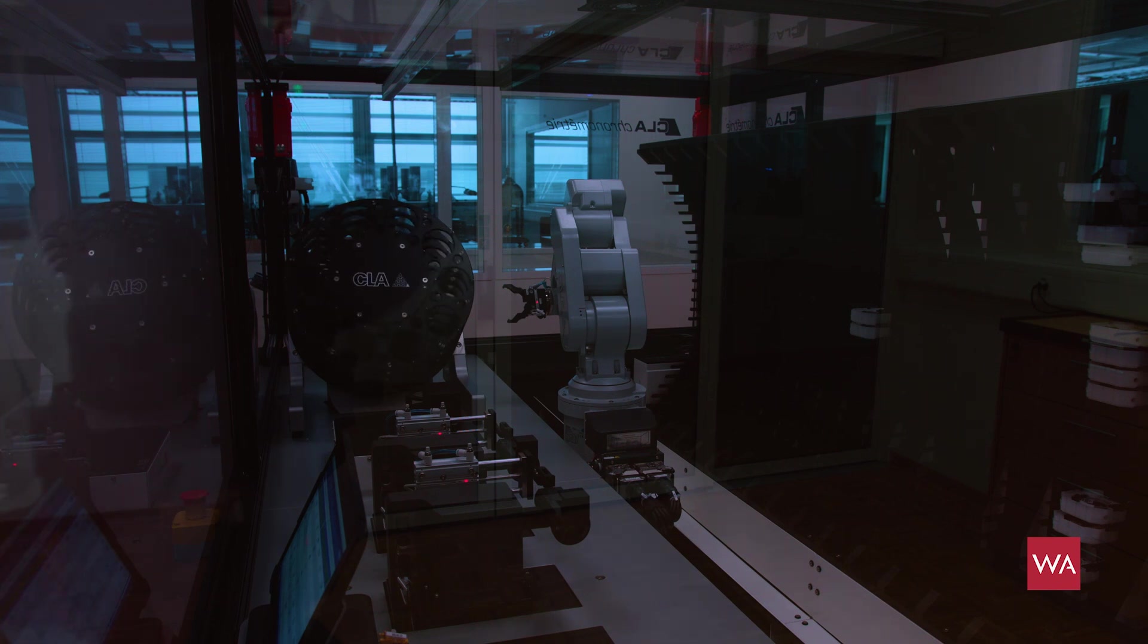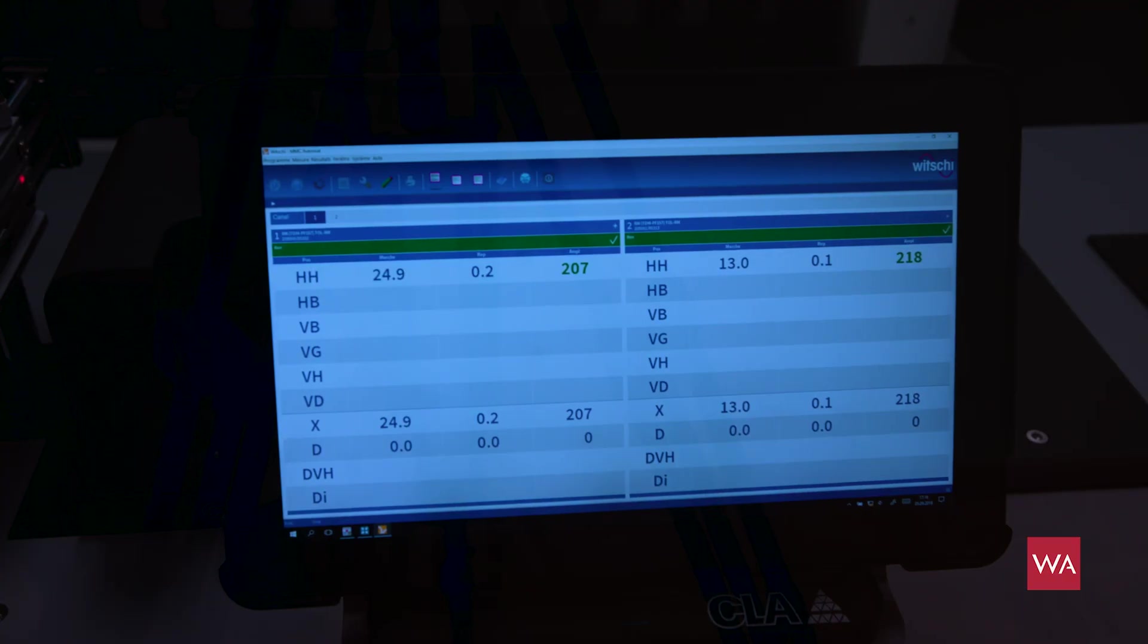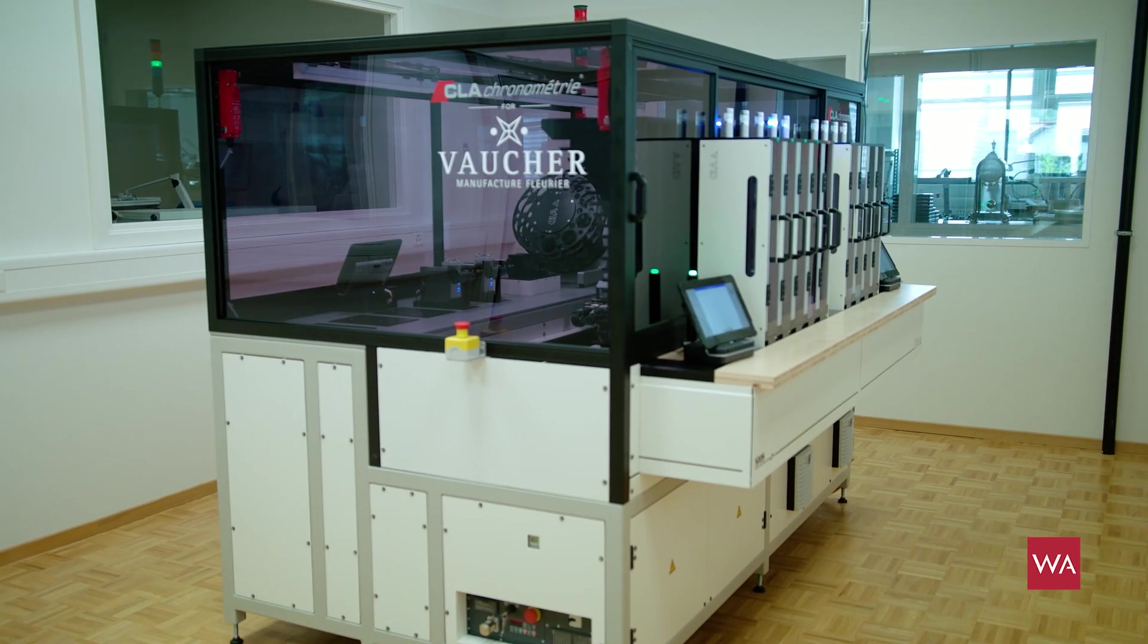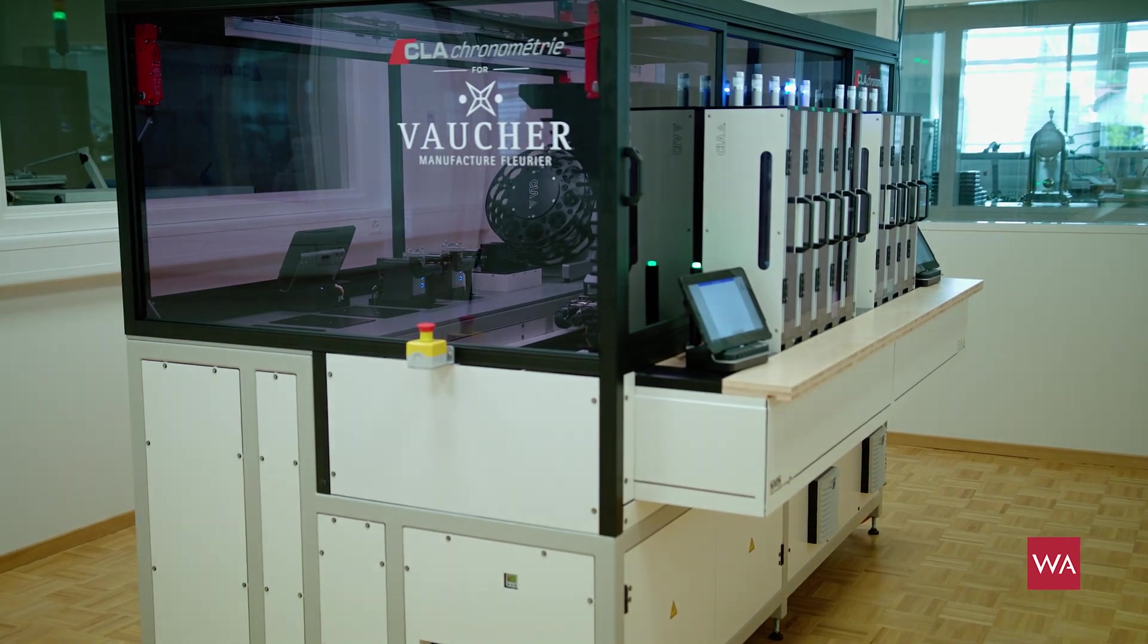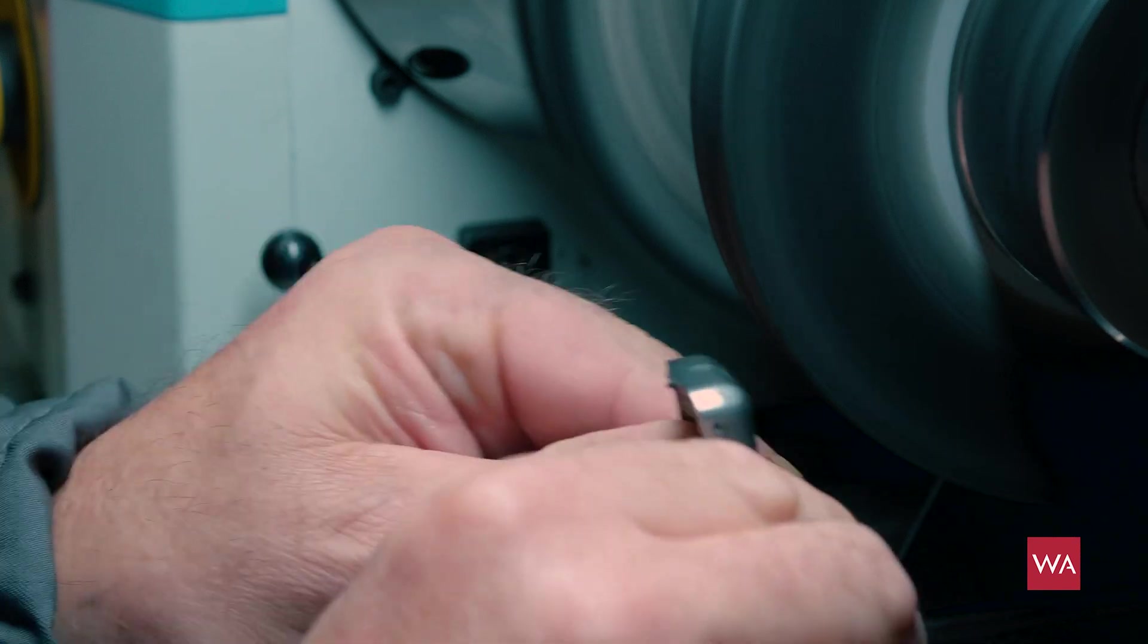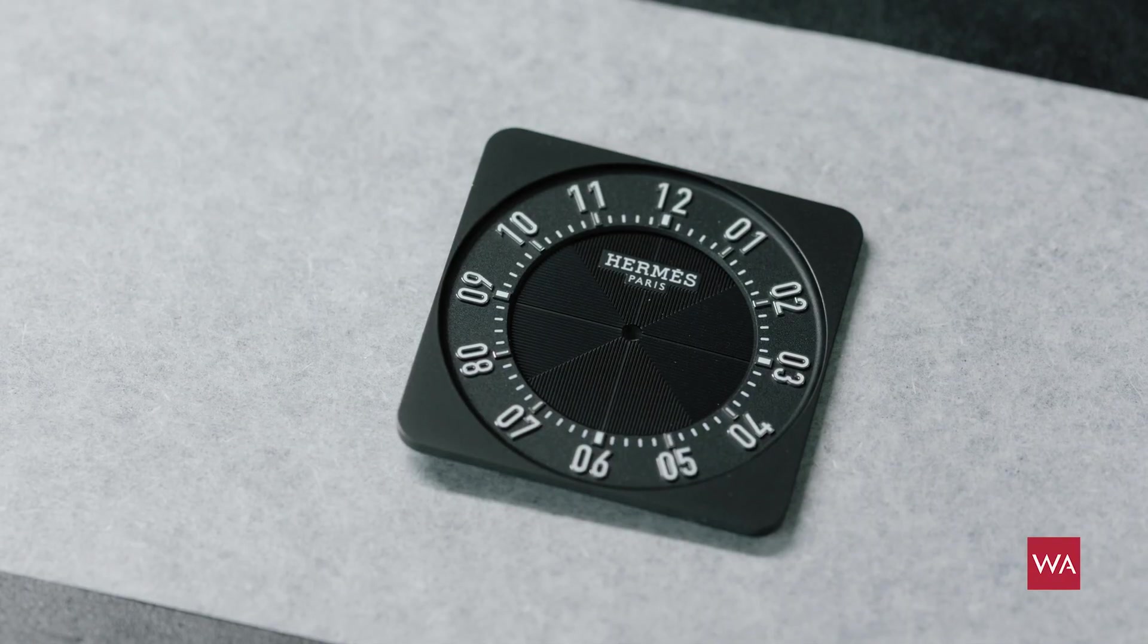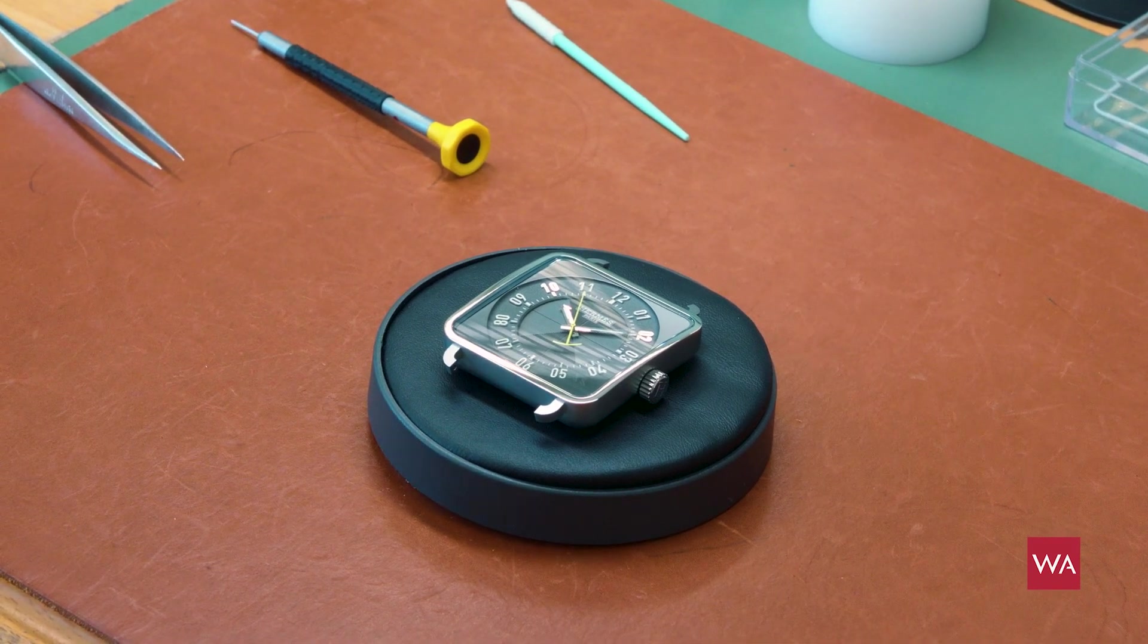So, only then, when all the requirements, given by Vaucher in this case, are fulfilled, this movement is released and may be shipped, then, to be encased into its proper case. And this is the next thing we're going to show you. The manufacturing of the cases and the dials, everything else you need to finally, of course, accomplish the entire Carriage watch from Hermes.